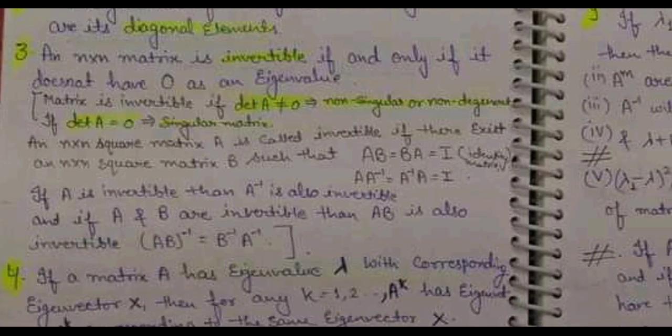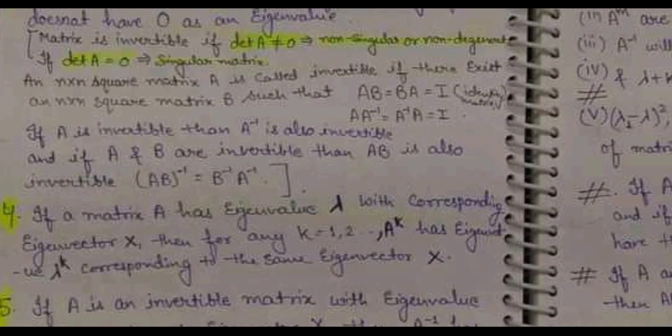For any square matrix A of order n×n, we call it invertible if there exists an n×n square matrix B such that AB equals BA equals the identity matrix I. This can also be written as A times A-inverse equals A-inverse times A equals I, because B from the first equation is equal to A-inverse.